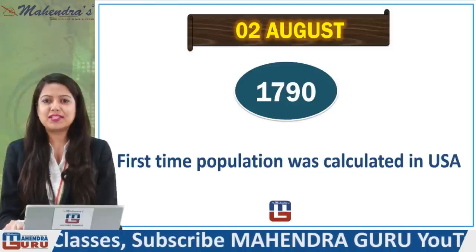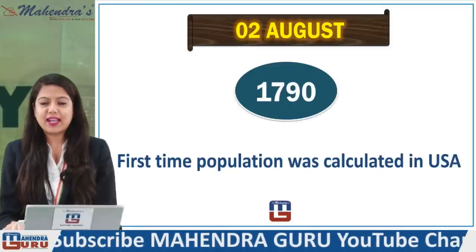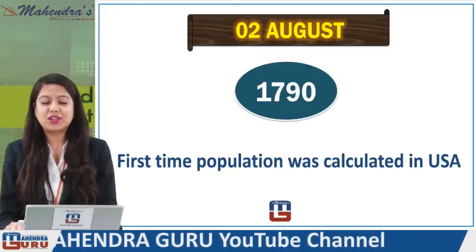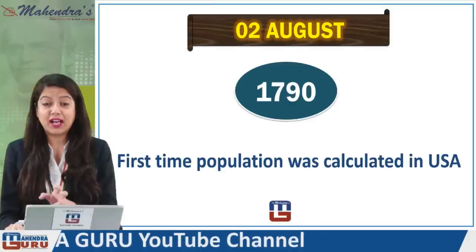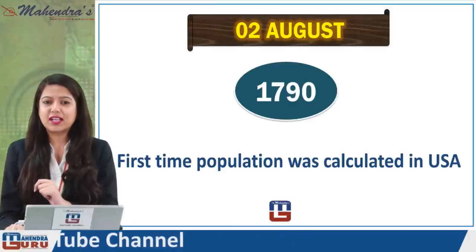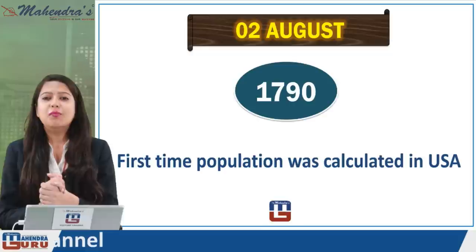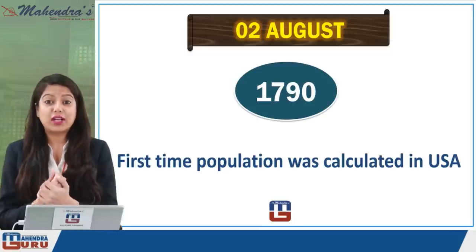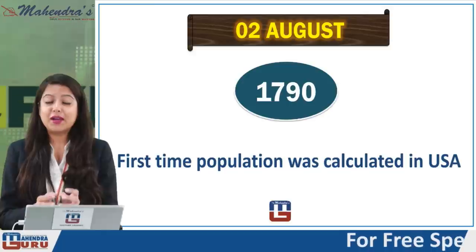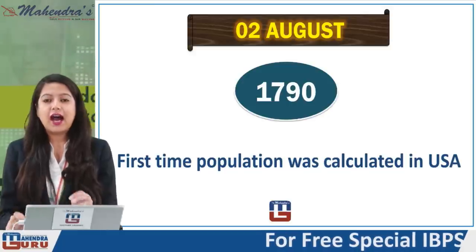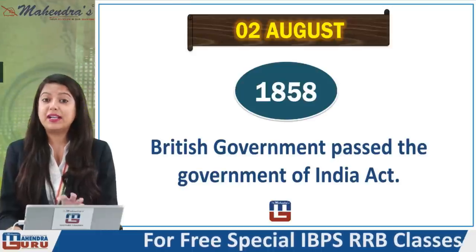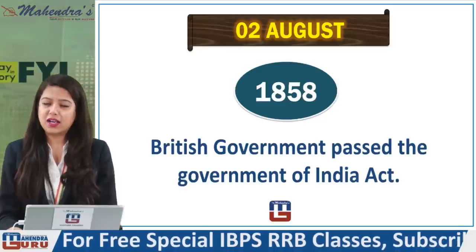The first event: 1790 was the year when the population was calculated for the first time in the United States of America. This is an important day because the calculation of any country's population is very significant. On August 2nd, 1790, the first census was conducted in America.